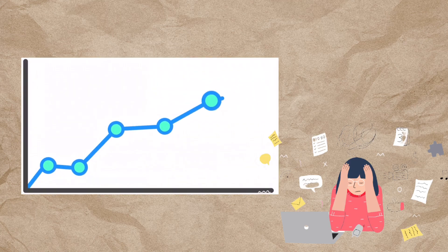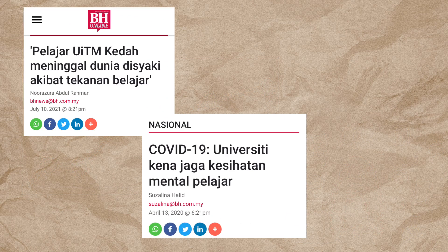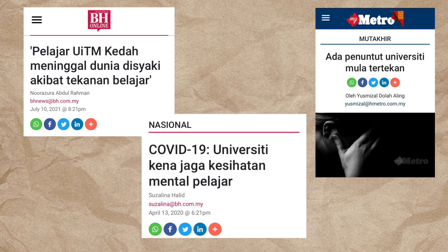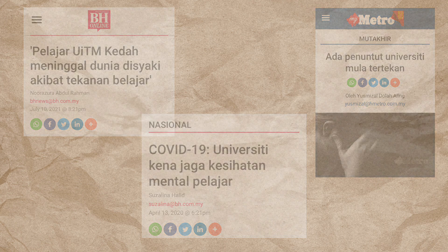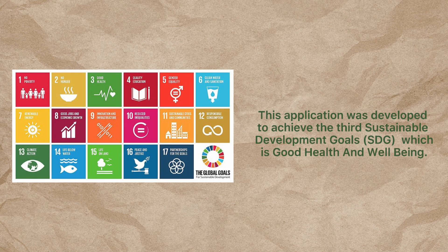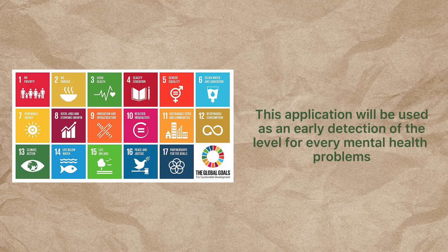The number of students suffering from depression, anxiety, and stress is currently increasing day by day. As seen lately, there are many cases of university students suffering from these mental health issues. This application was developed to achieve the third Sustainable Development Goal, which is Good Health and Well-Being, and will be used for early detection and identification of mental health problem levels among university students.